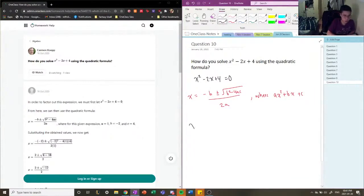So using this formula here, we have negative negative 2 plus or minus negative 2 squared minus 4 times 1 times 4 divided by 2 times 1.